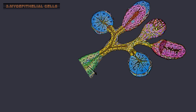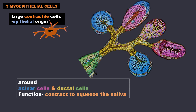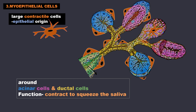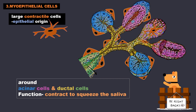Lastly we have the myoepithelial cells. These are large contractile cells of epithelial origin which wrap around both the acinar cells and the ductal cells, and contract to squeeze the saliva out of the gland and into the oral cavity.